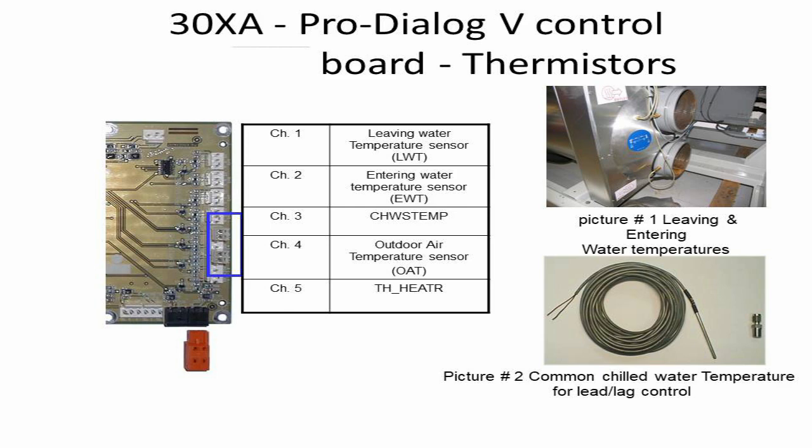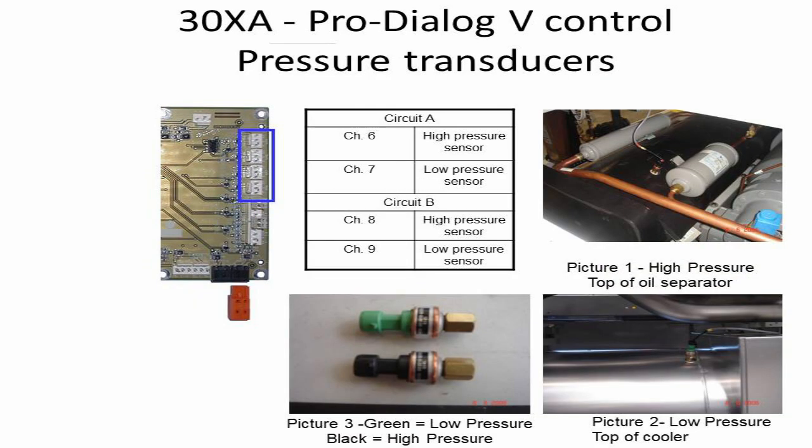The Outdoor Air Temperature Sensor is connected on Channel 4. The panel heater is connected on Channel 5. The high pressure transducer and low pressure transducer for Circuit A are connected on Channels 6 and 7.